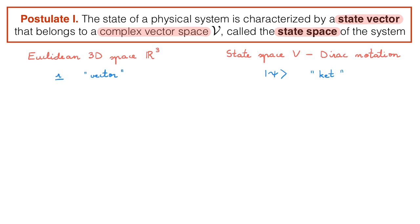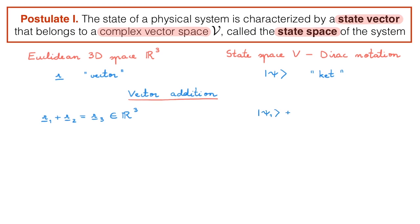A vector space has two defining properties. The first one is vector addition, and the second one is scalar multiplication. Starting with vector addition, we can write the sum of two vectors R1 and R2, which gives us a third vector R3, which also belongs to the Euclidean three-dimensional space. Similarly, we can write the sum of two kets |ψ1⟩ and |ψ2⟩ as giving us a third ket |ψ3⟩, which also belongs to the state space.